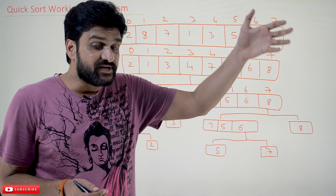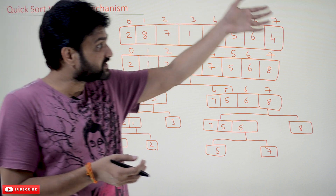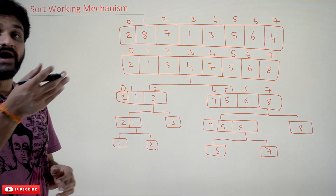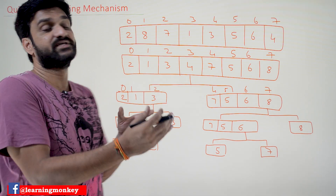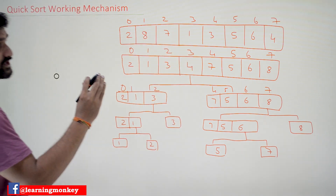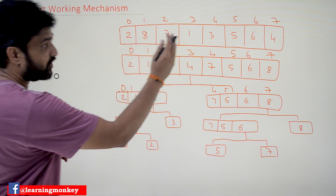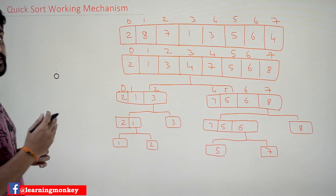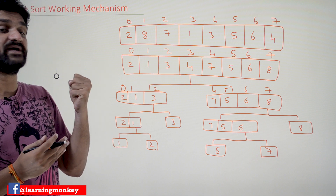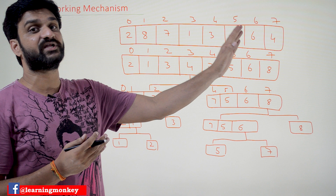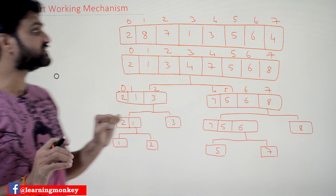Once the pivot element is identified, we are going to bring that element into its correct position. In the process of executing the partition algorithm, the pivot element is brought to its position, elements smaller than the pivot are brought to the left side, and elements larger than the pivot are brought to the right side.